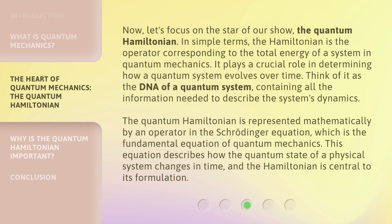Now, let's focus on the star of our show, the Quantum Hamiltonian. In simple terms, the Hamiltonian is the operator corresponding to the total energy of a system in quantum mechanics. It plays a crucial role in determining how a quantum system evolves over time. Think of it as the DNA of a quantum system, containing all the information needed to describe the system's dynamics. The quantum Hamiltonian is represented mathematically by an operator in the Schrödinger equation, which is the fundamental equation of quantum mechanics. This equation describes how the quantum state of a physical system changes in time, and the Hamiltonian is central to its formulation.